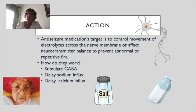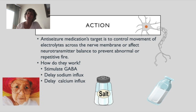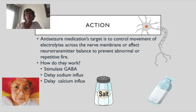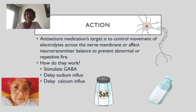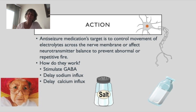How do seizure meds work? The target is to control movement of electrolytes across the nerve membrane, or to affect neurotransmitter balance to prevent abnormal or repetitive firing.